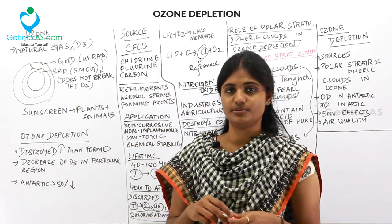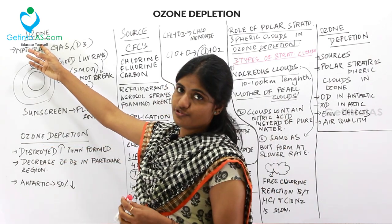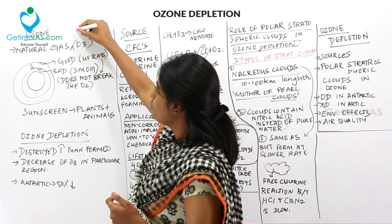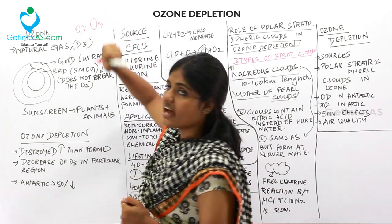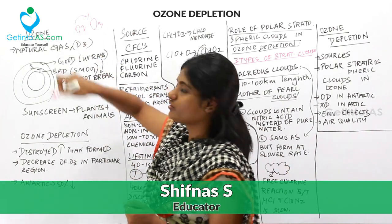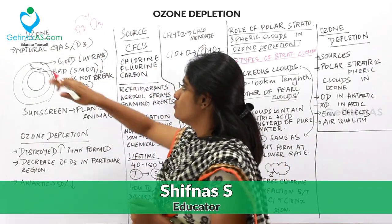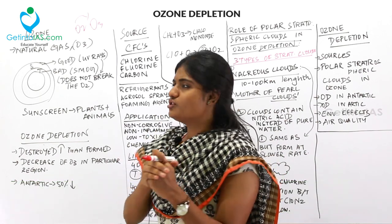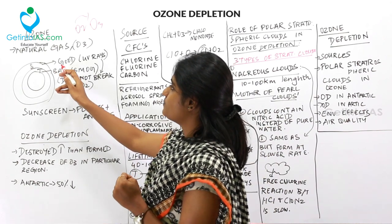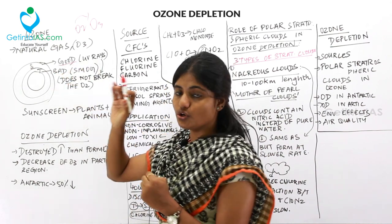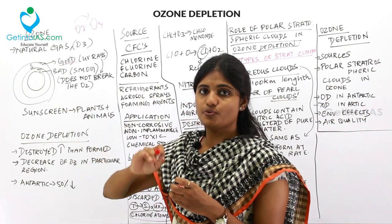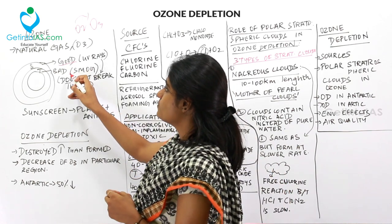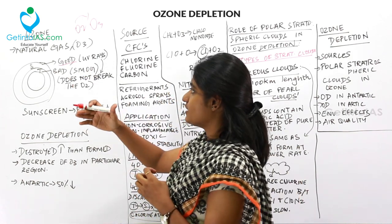What is ozone depletion? First, what is ozone? Ozone has the chemical formula O3. Oxygen has two atoms and ozone has three atoms of oxygen — that is the difference between oxygen and ozone. Ozone is a natural gas present in the troposphere and stratosphere. If this gas is present in the stratosphere it is good, but the same gas in the troposphere is bad because it forms smog.